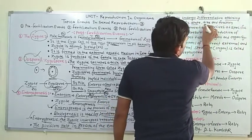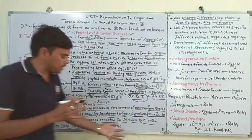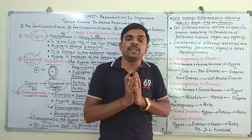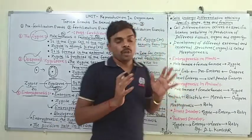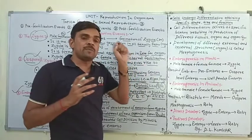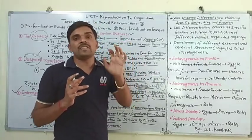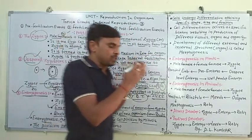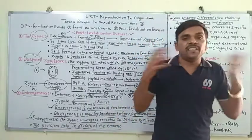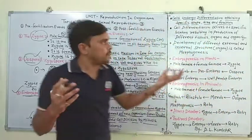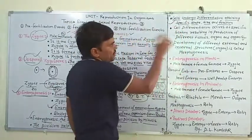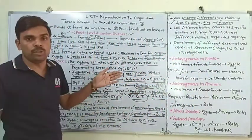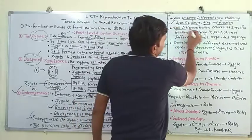Cells undergo differentiation, attaining specific shape, size, and function। Embryogenesis में जो more cells बनी हैं उन cells में differentiation होता है, और वो cells specified shape, size, और function के लिए other cells से different हो जाती हैं।